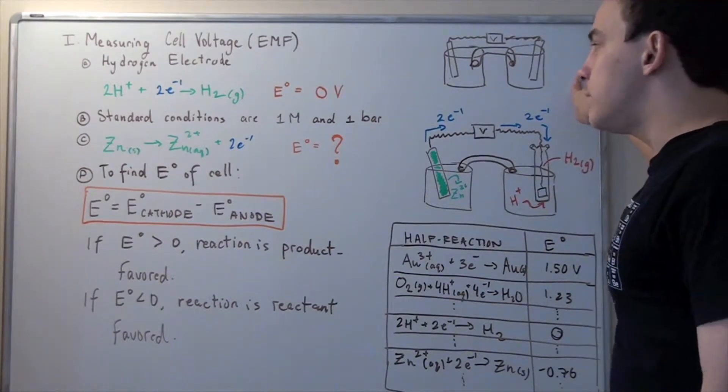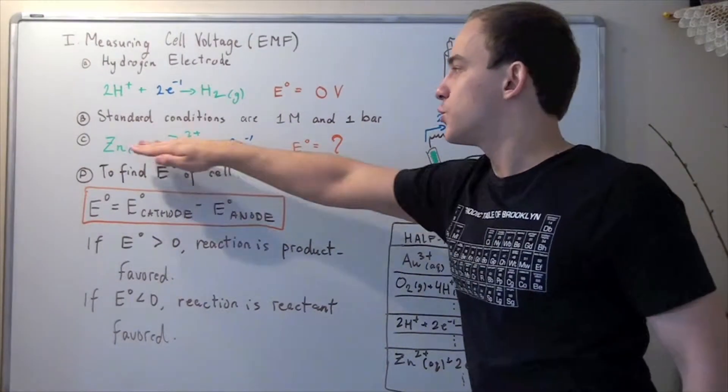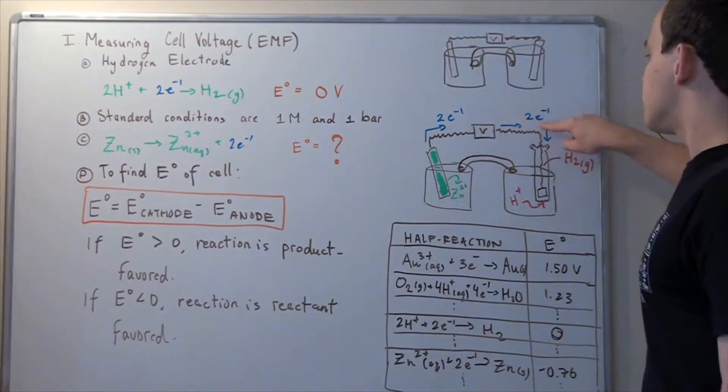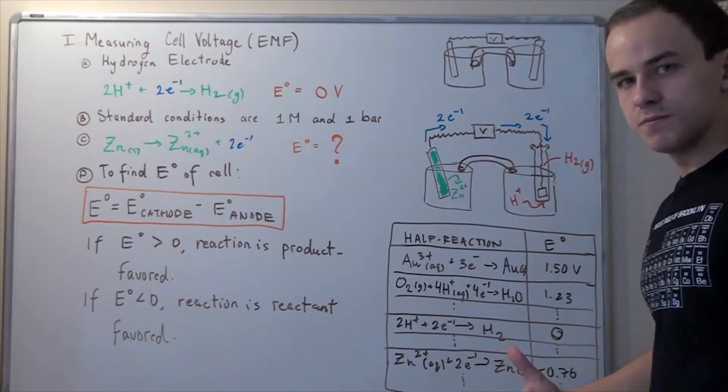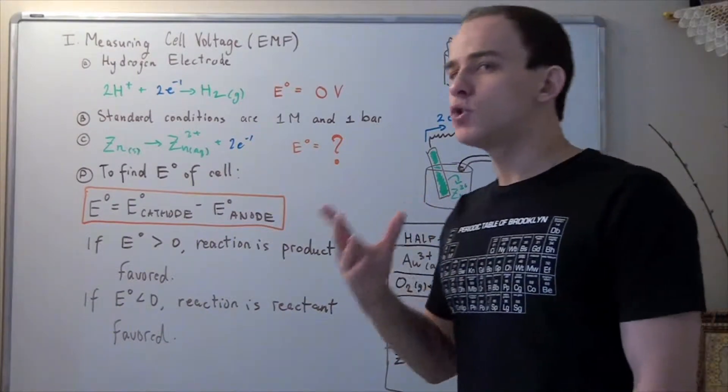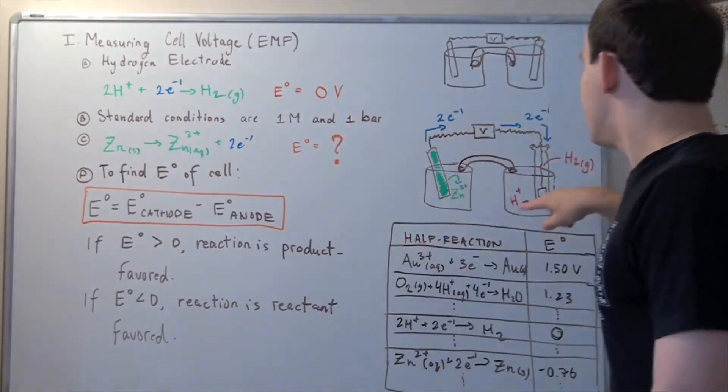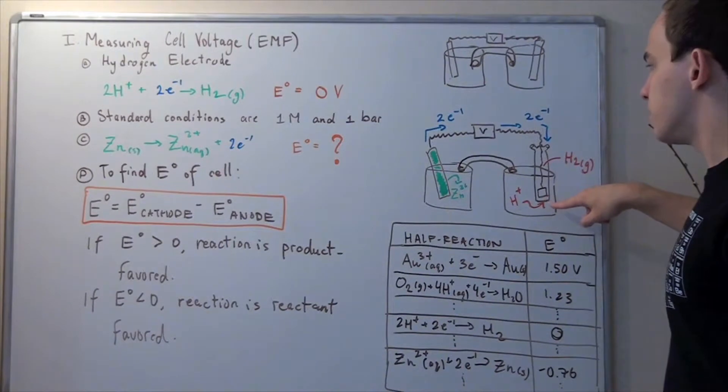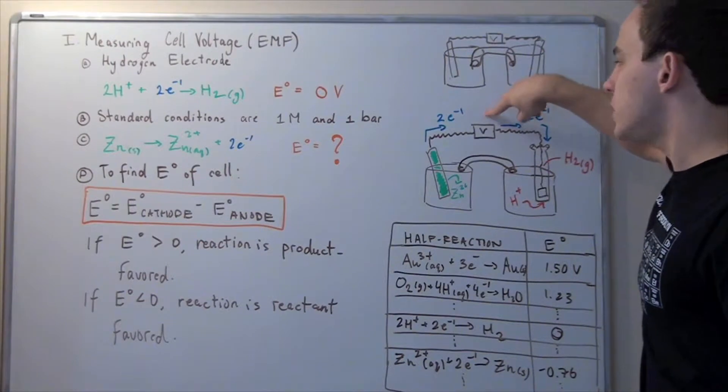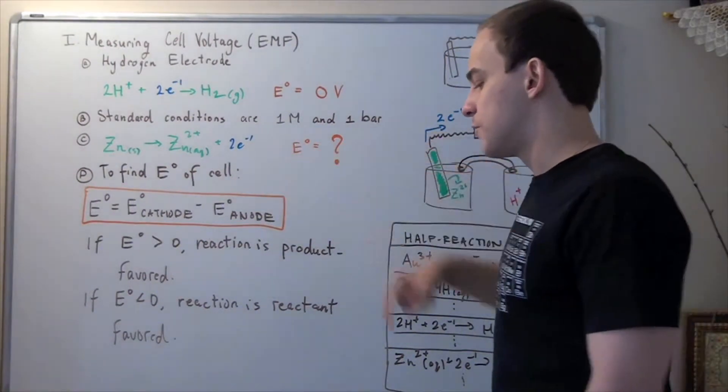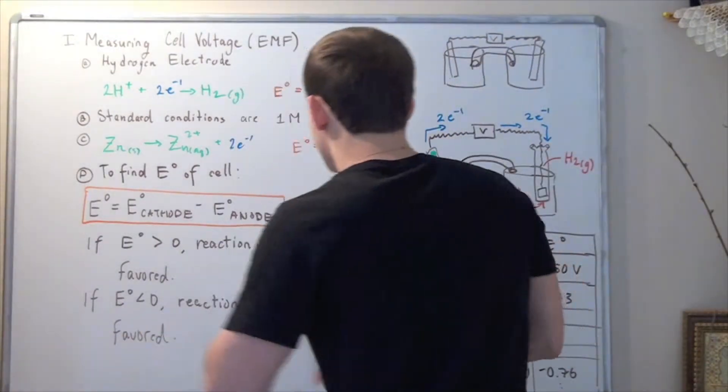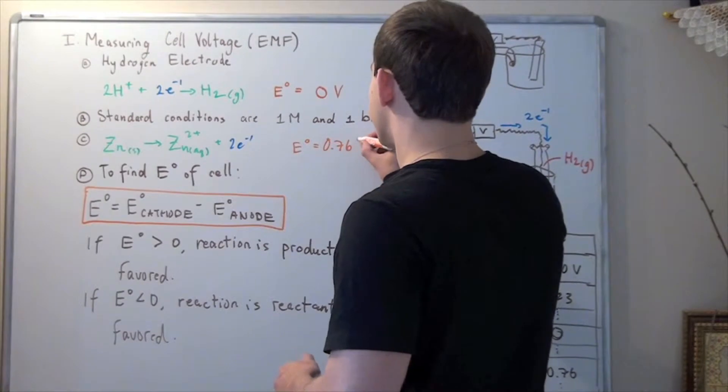Now how would we measure the cell voltage of this reaction? Well, this voltmeter, when the electrons travel from this side to this side, will read a certain voltage. Now what will this voltage represent? Well, remember, we assign an arbitrary value of zero volts to this hydrogen electrode. And that means whatever this voltmeter reads, that is our cell voltage. So for this particular reaction, our cell voltage should be around 0.76 volts.